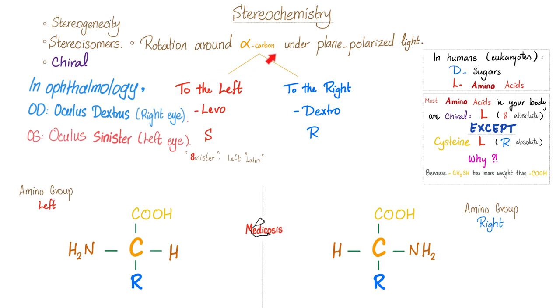Just to belabor the point of left versus right: in ophthalmology or optometry, the right eye is referred to as oculus dextrous or OD. The left eye is referred to as OS, oculus sinister.